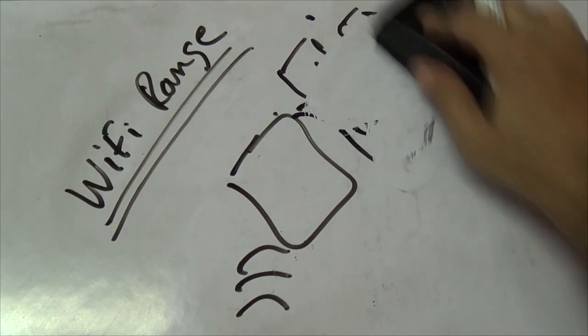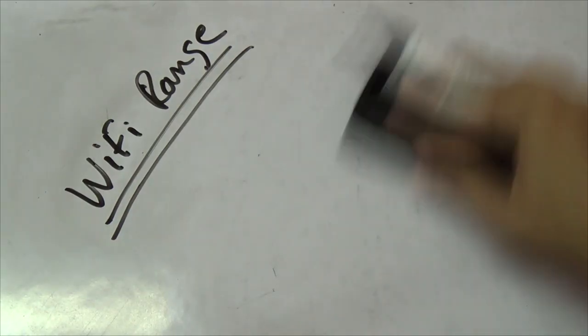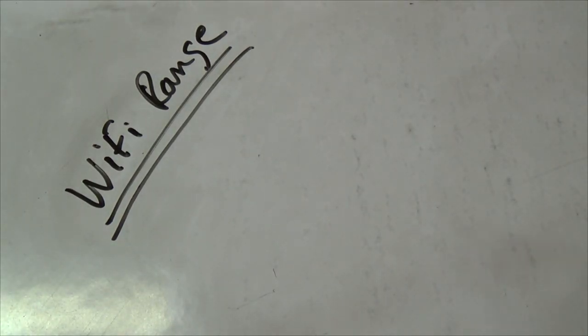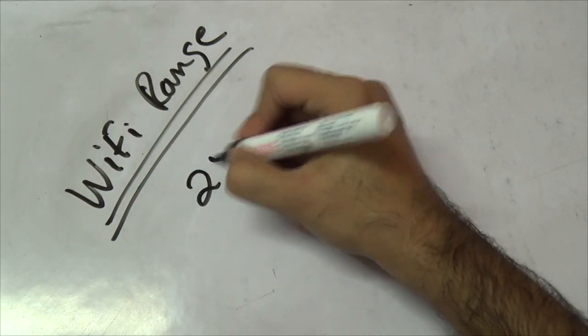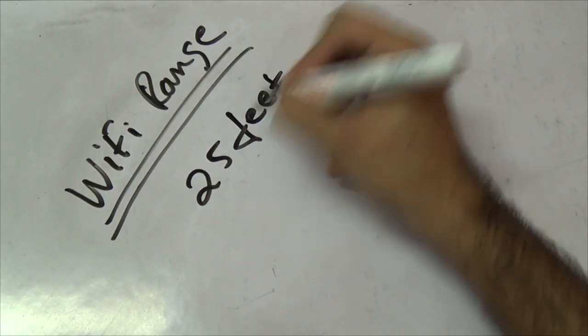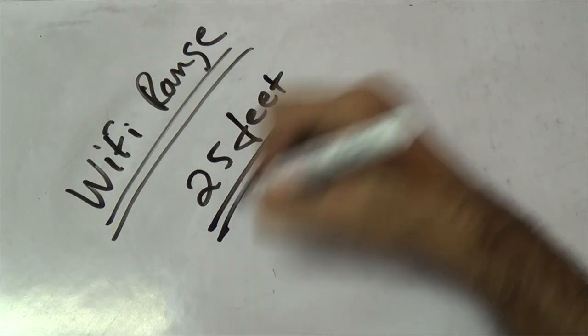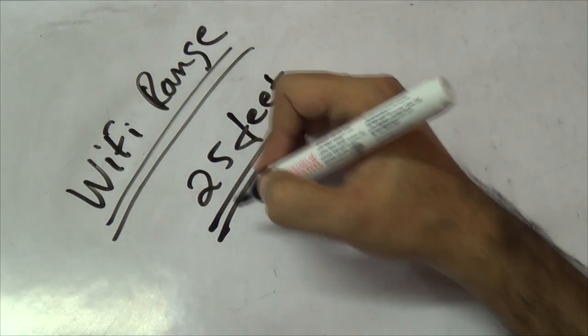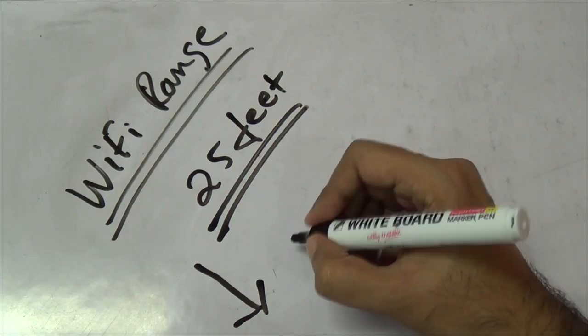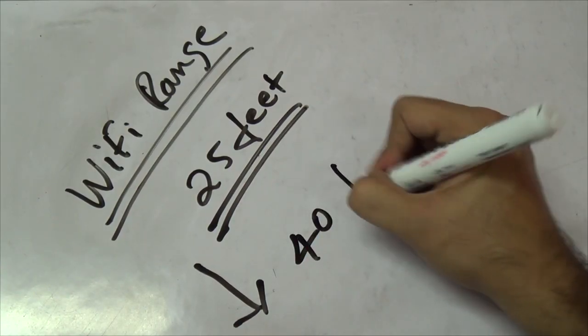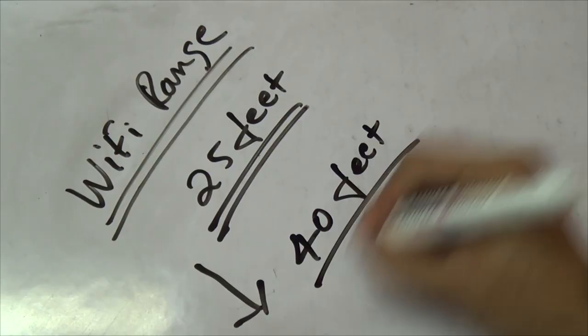Regarding the range, I would say ideally the best speeds that you can get is up to about 25 feet in an urban environment. You do get very good speeds with Wi-Fi, and the further you go speeds start to drop a little bit. I have seen that after 40 feet the speeds generally start to go down.